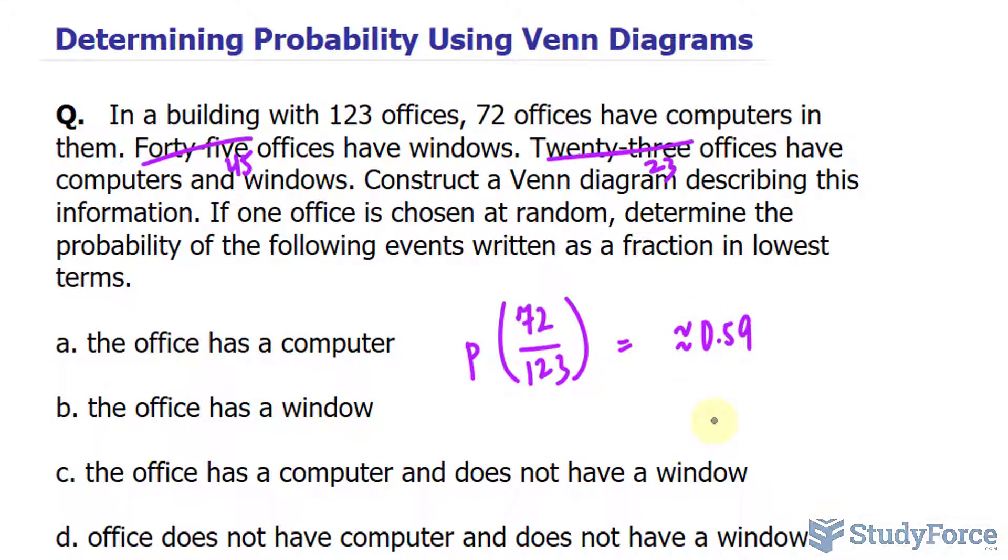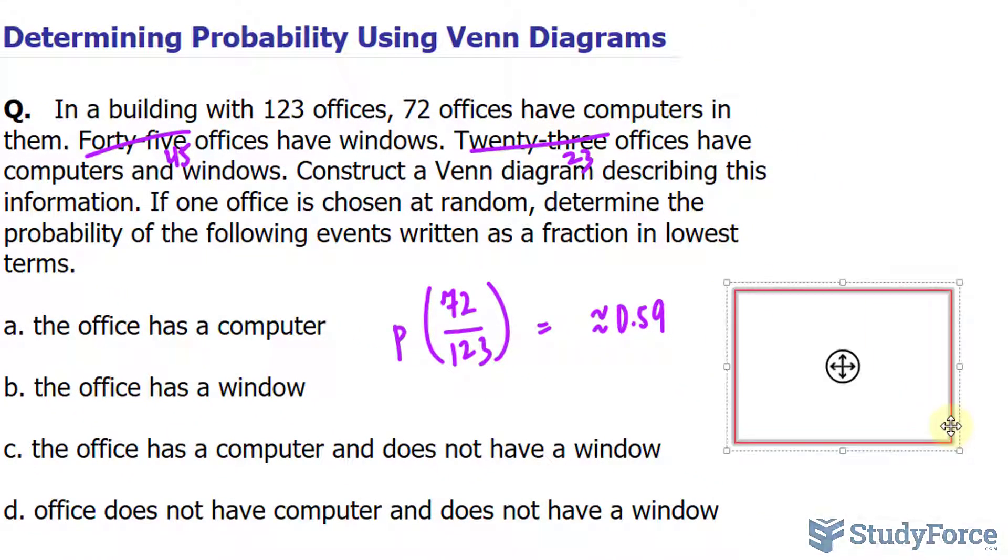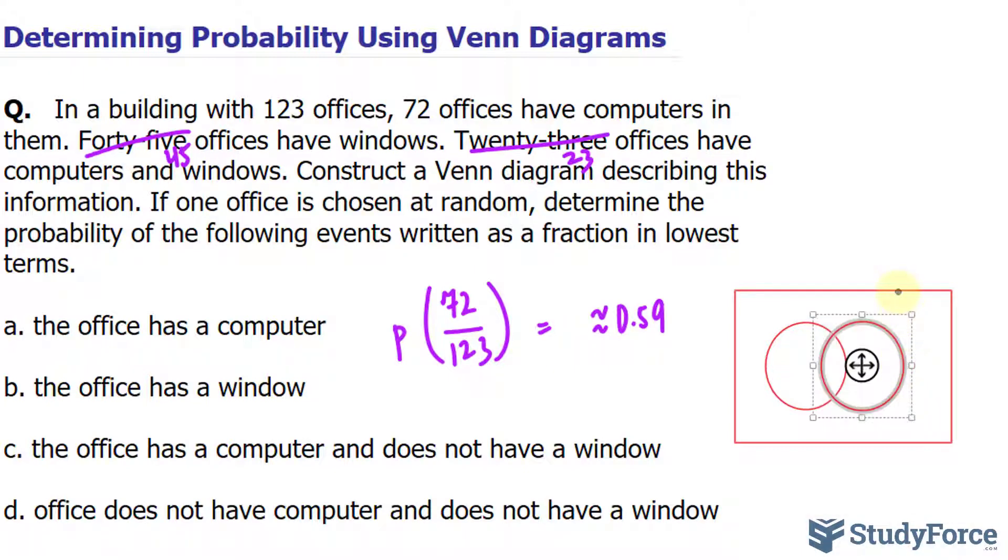Now remember, the question asks us to construct a Venn diagram describing this information. Our Venn diagram will look like this. I'll have a rectangle that represents the total number of offices. One of the circles will represent the office has a computer, and the other will represent that the office has a window. Because there are some offices with windows and computers, there will be two intersecting circles.